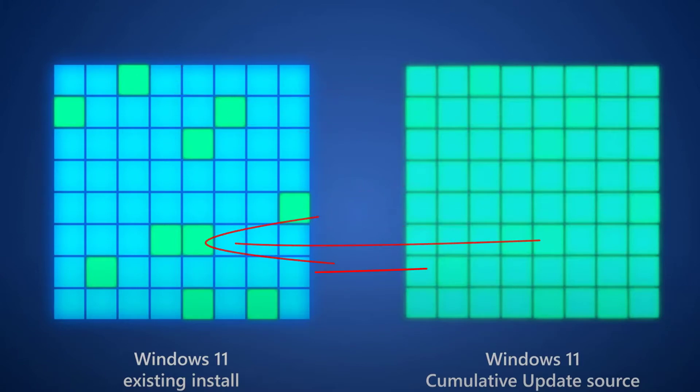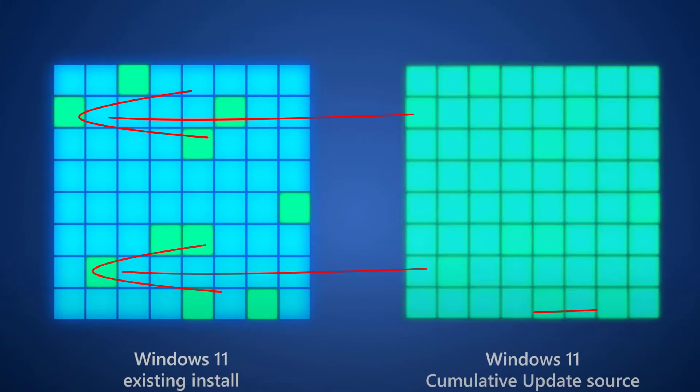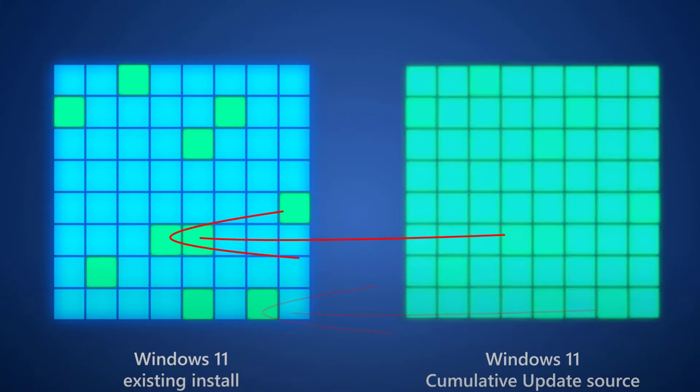For instance, let's say you have a Windows 11 cumulative update that contains one driver and six registry entries. If your machine already has the new driver, your Windows Update is only going to pull down those registry changes. Microsoft says that makes their updates about 40% smaller.